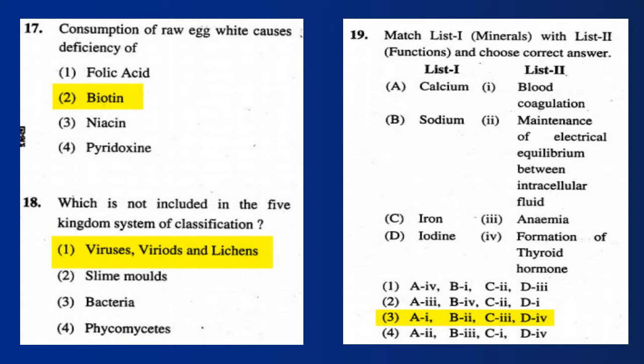Question 19: Match List 1 (Minerals) with List 2 (Functions). The correct answer is: A. Calcium — blood coagulation; B. Sodium — maintenance of electrical equilibrium; C. Iron — anemia; D. Iodine — formation of thyroid hormone.